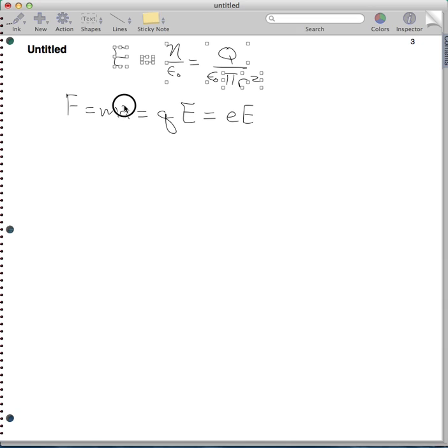So now I want to solve for a, the acceleration, because the acceleration is what's going to lead me to get the velocity. So now a is equal to, I divide both sides of this equation and this equation by m, and I get a is equal to the charge on the electron, times e, over the mass of an electron.